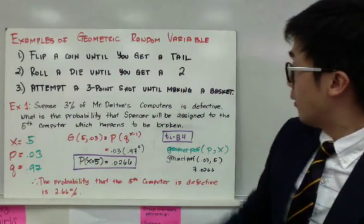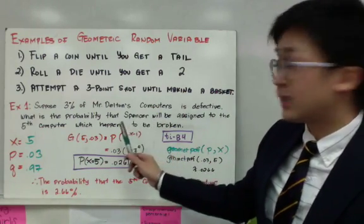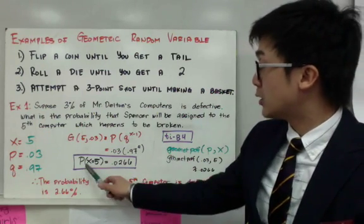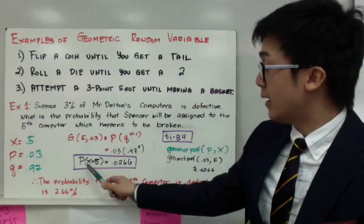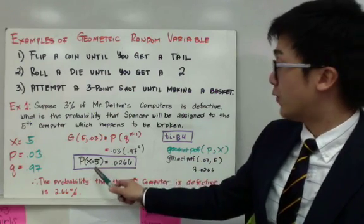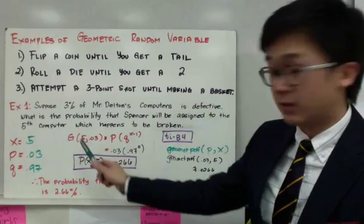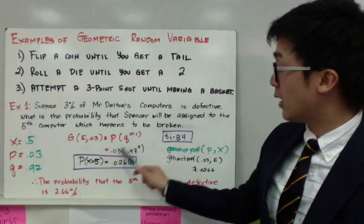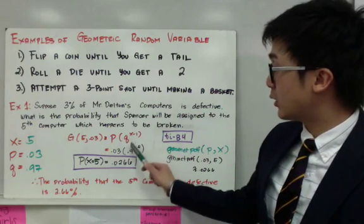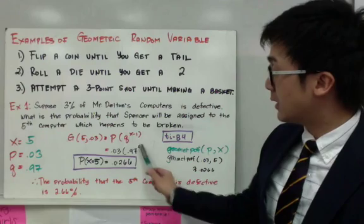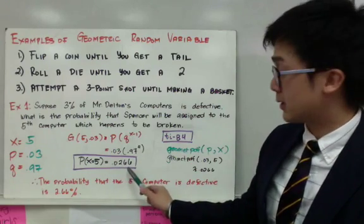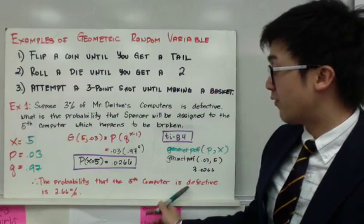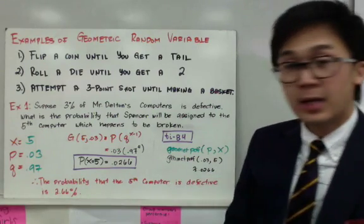To find the probability that Spencer is assigned to the fifth defective computer, we calculate P(X = 5) using the formula p times q raised to x minus 1. With p = 0.03 and q = 0.97 raised to the power of 4, using a calculator gives 0.0266. Therefore, the probability that the fifth computer is defective is 2.66%.